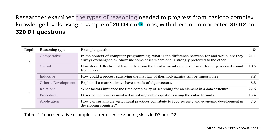As mentioned, there are different types of reasoning needed to progress from basic to more complex knowledge levels. They used a sample of 20 D3 questions, interconnecting 80 D2 and 320 D1 questions. At depth three, we have comparative, causal, inductive, and criteria development. At level two, relational, procedural, application, and so on. They analyzed this and it was a really nice study.